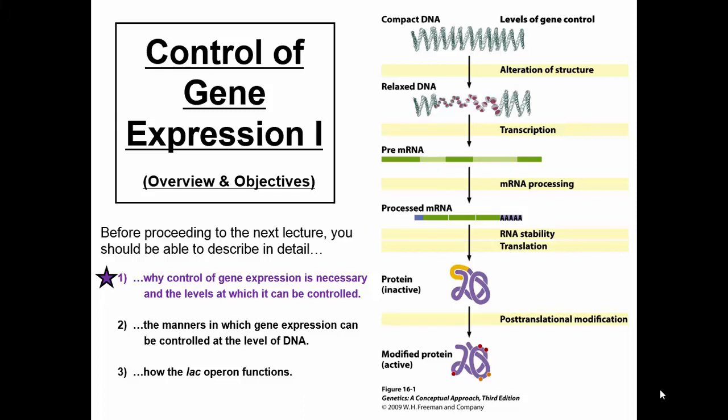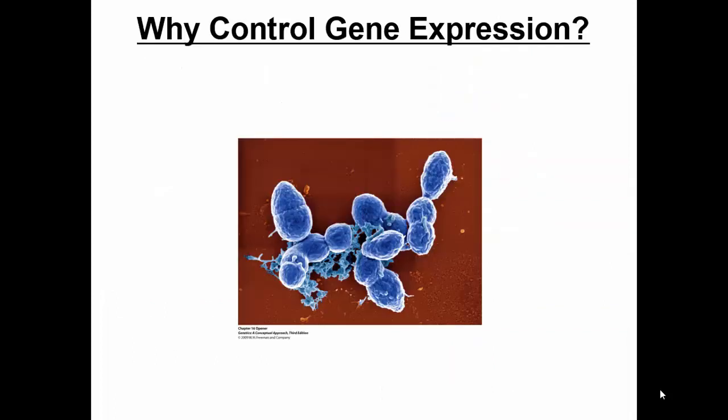Today's lecture is Control of Gene Expression 1. We have three aims for today. First, we want to talk about why control of gene expression is necessary, what's the point, and how it can be controlled. Also, we want to talk about the manners of gene expression, and then specifically talk about something called the lac operon.